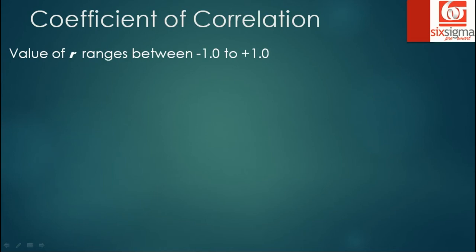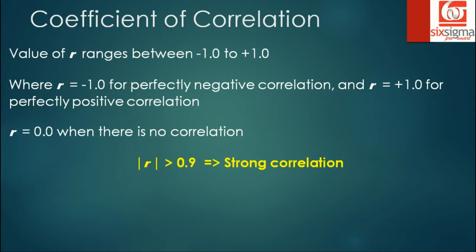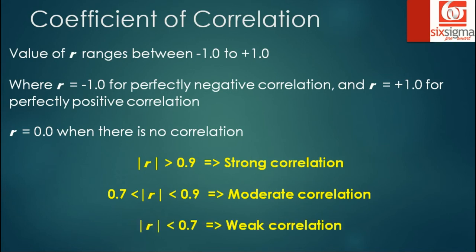Let's understand the coefficient of correlation a little better. It ranges between negative one to positive one. Negative one means a perfectly negative correlation and positive one means a perfectly positive correlation. R equals zero when there is no correlation. In general, if the magnitude of R is greater than 0.9, we call it a strong correlation. If the value of R lies between 0.7 to 0.9, we call it a moderate correlation. And if the value of R is less than 0.7, we call it a weak correlation. The important thing is that you should not confuse R with R square. We are talking about R here, which is Pearson's correlation coefficient and not R square, which is a coefficient of determination.